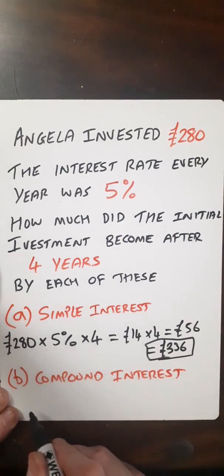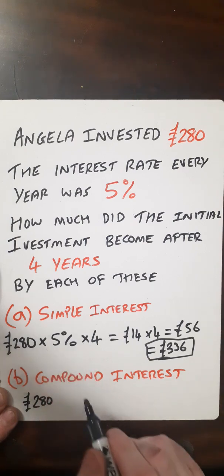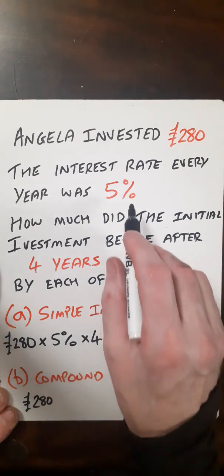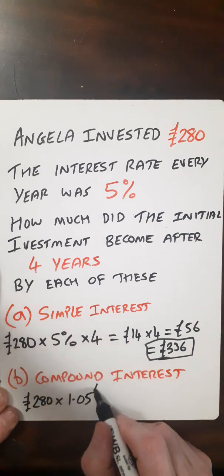So now the compound interest. For the formula for that, we take the initial investment, which is £280, turn the 5% into a multiplier, and as it was growth, we need 1 plus 0.05, so times that by 1.05, and raise that to the power of the number of years, which is 4.